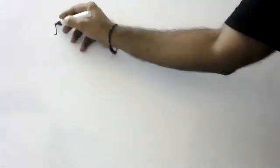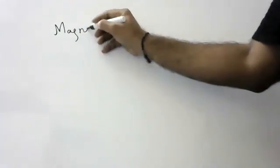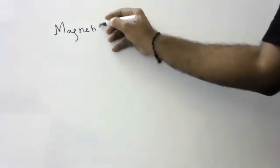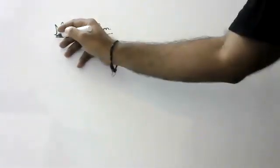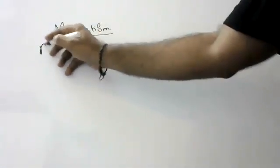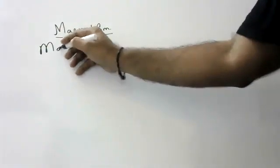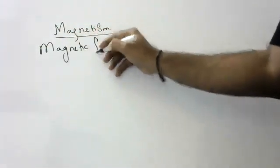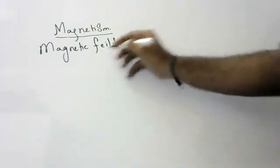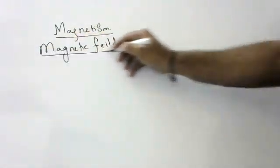Children, today we are going to start another lesson: magnetism. So what is magnetism? In magnetism there are so many topics. The first topic which we are going to discuss is magnetic field. Today I will tell you about this topic: magnetic field.